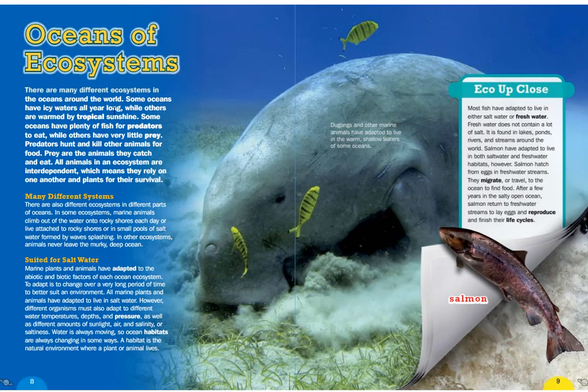There are many different ecosystems in the oceans around the world. Some oceans have icy waters all year long while others are warmed by tropical sunshine. Some have plenty of fish for predators to eat while others have very little prey. All animals in an ecosystem are interdependent, meaning they rely on one another and on plants for their survival. In some ecosystems, marine animals climb out of the water onto rocky shores or live attached to rocky shores or in small pools of salt water.